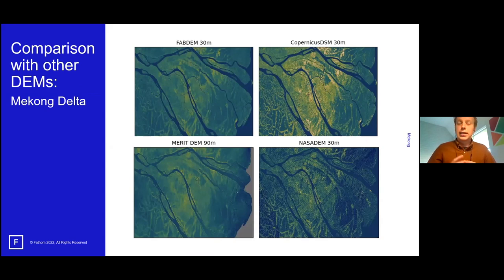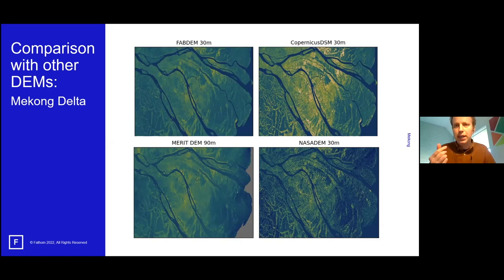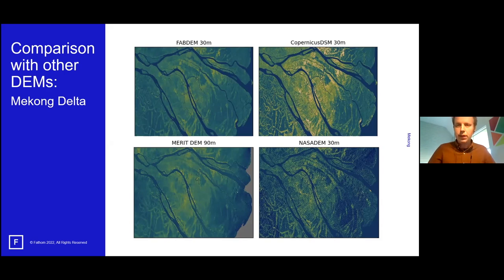Another example from the Mekong Delta — a favorite benchmark for DEM comparison. FAB DEM is in the top left; the Copernicus DEM in the top right shows many artifacts — the pink/yellow colors represent trees and buildings — which have been removed in FAB DEM. We also compare to the MERIT DEM and the NASA DEM, a variation of SRTM at 30 meters which shows significant striping artifacts.